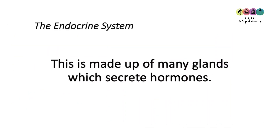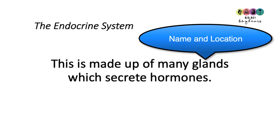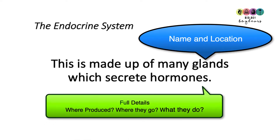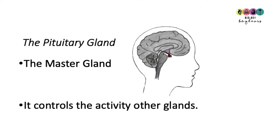The key to this chapter is knowing that the endocrine system is made up of many glands, each secreting particular hormones. You need to know the name of the glands, where they are in the body, what the hormones are, and what they do. So let's go through each of the important glands.